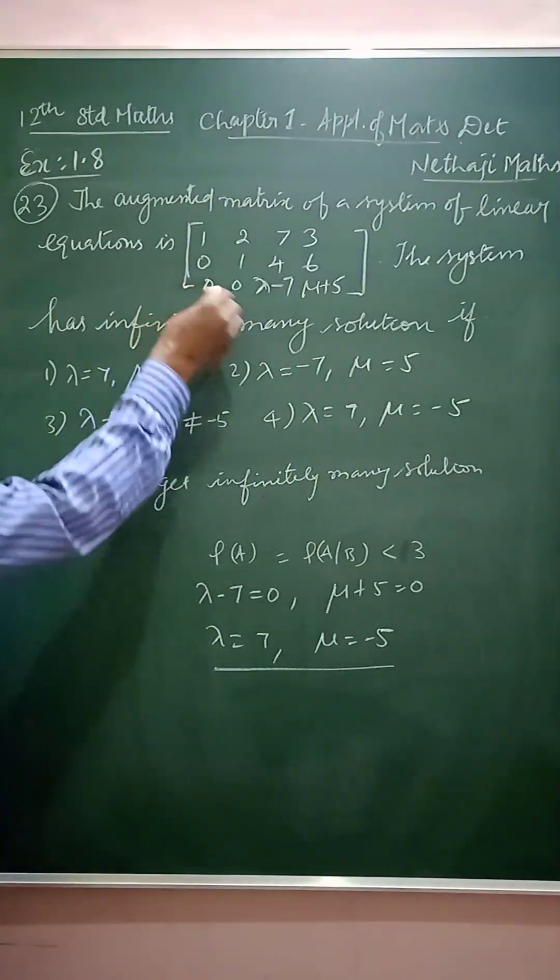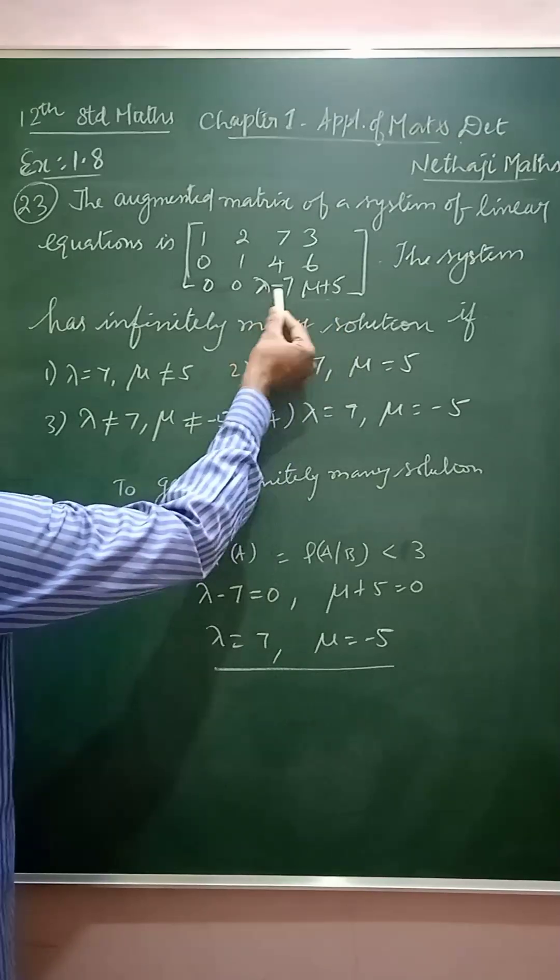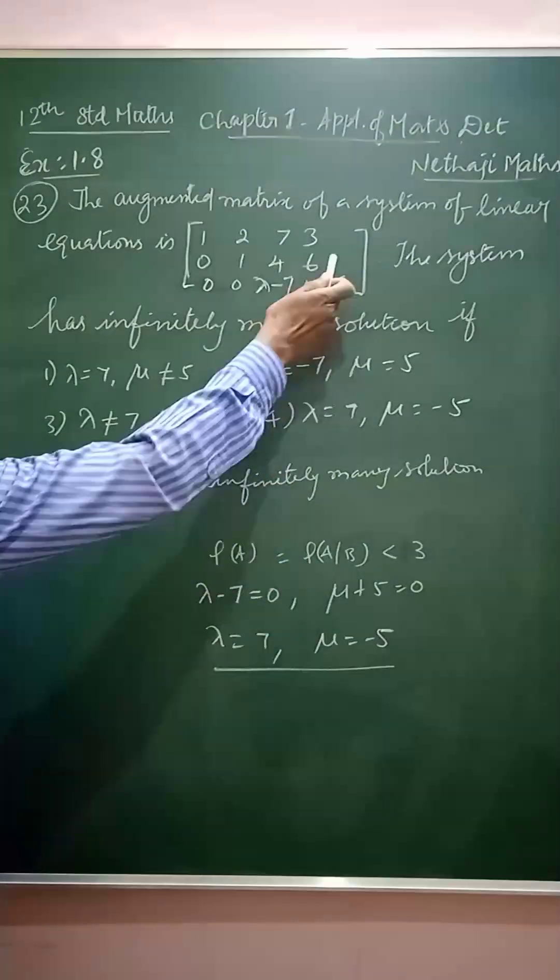So only the augmented matrix is given. The last element is lambda minus 7, lambda mu is mu plus 5.